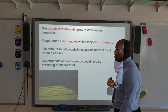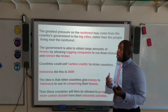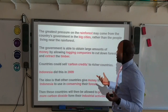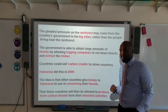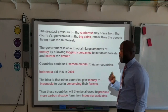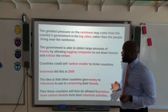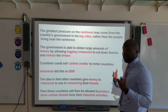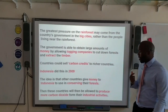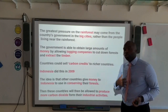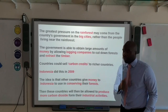We need governments and aid groups to step in with funding. Governments can get money through deforestation by selling wood to logging companies to extract timber, but countries can also sell what are known as carbon credits. A good example is Indonesia in 2009 — other countries gave Indonesia money, which Indonesia used to conserve their forests. In return, those countries were allowed to produce more carbon dioxide from their industrial activity, essentially paying to put more CO₂ in the atmosphere while funding forest conservation.